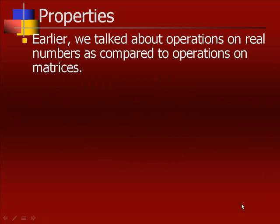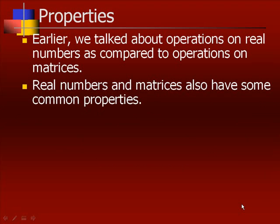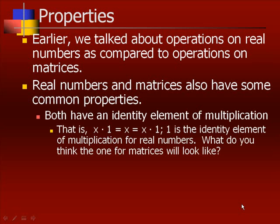Earlier we talked about operations on real numbers as compared to operations on matrices. We said real numbers and matrices could be added, subtracted, multiplied, and divided. Real numbers and matrices also have some common properties — both have an identity element of multiplication. That is, x times 1 equals x equals x times 1. We say that 1 is the identity element of multiplication for real numbers.